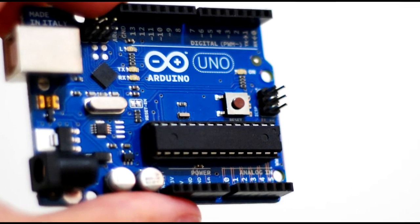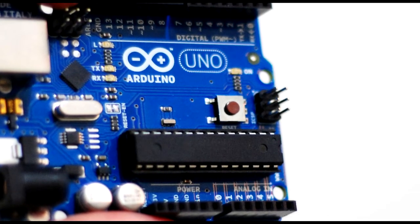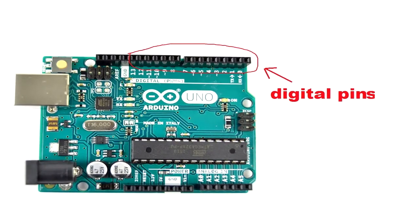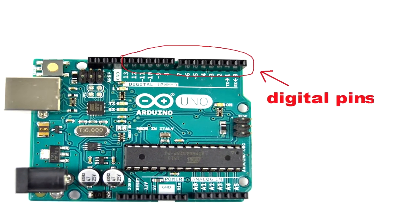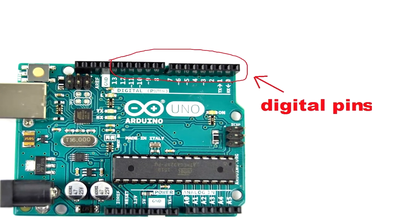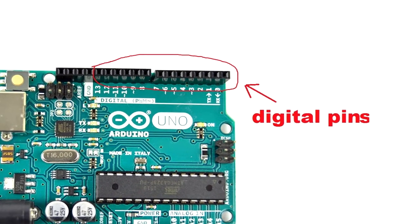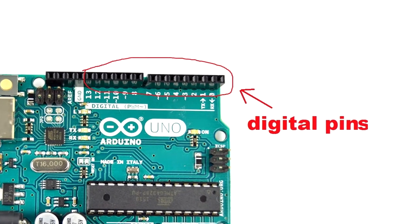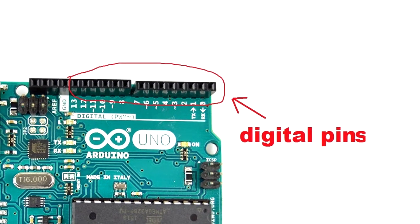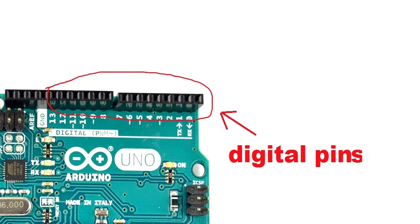This is the Atmega 328P microcontroller. These are the digital pins, the digital input and output. PIN 3, 5, 6, 9, 10 — this pin is the 8-bit PWM output. This is PIN 1, the serial communication and serial transmission.